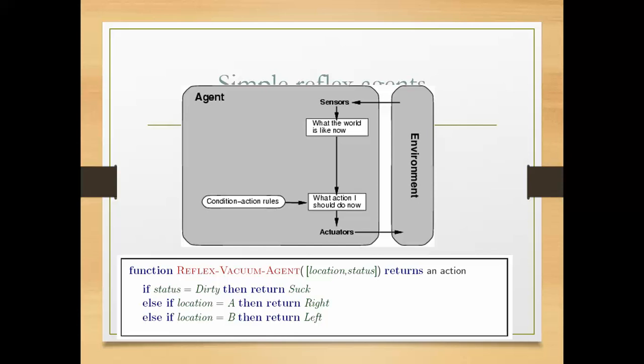Through sensors, the agent knows what the environment is — you can imagine that environment is the world. Based on the present situation of the environment, it is going to perform actions to the environment through actuators by using some conditional action rules. This is what we call a simple reflex agent.